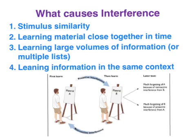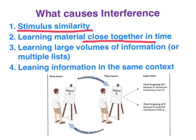So what causes interference? Stimulus similarity — which may explain why we struggle with certain phone numbers, since in Australia all mobile numbers are ten digits. Interference is also increased when we learn content close together in time and in large volumes, and when we learn information in the same context, such as a classroom, which can actually enhance the interference.